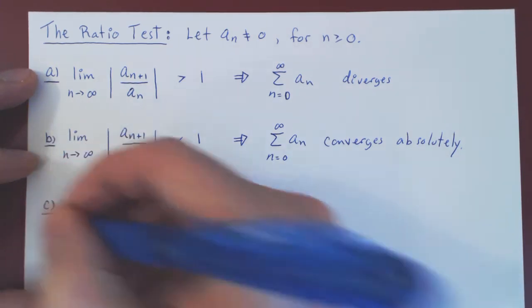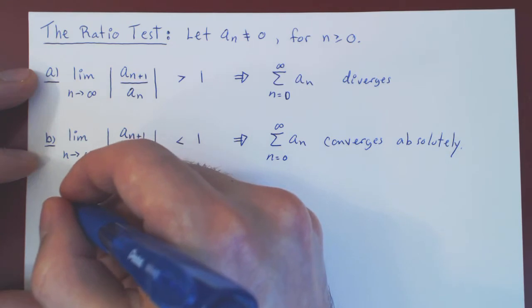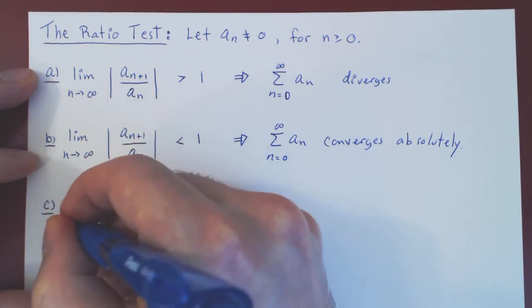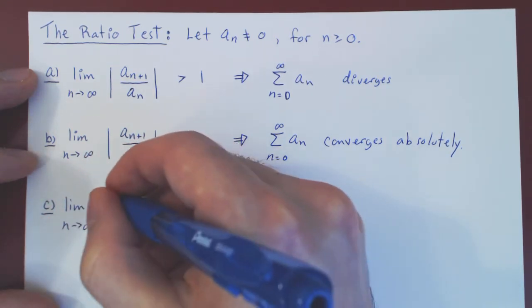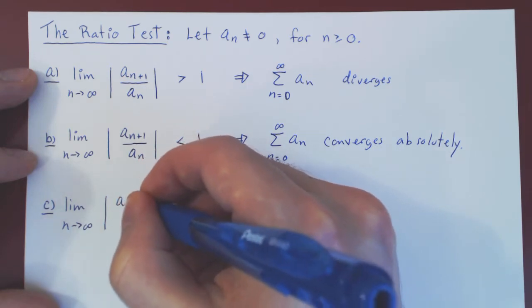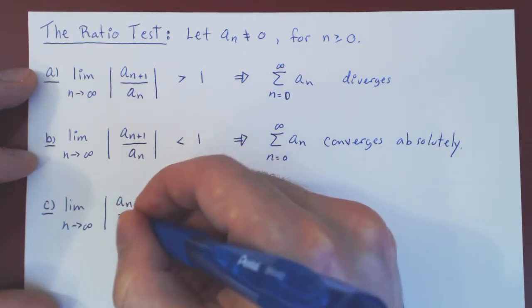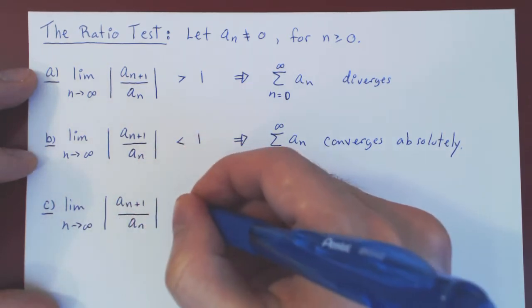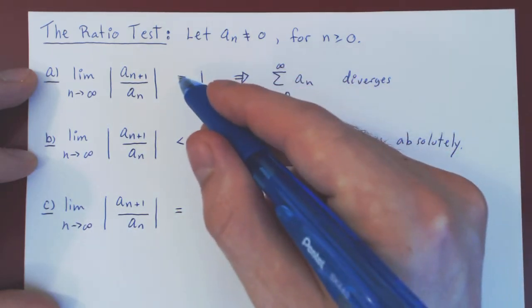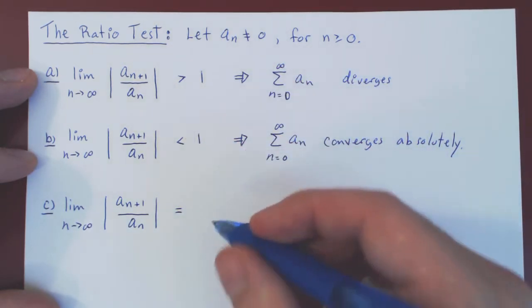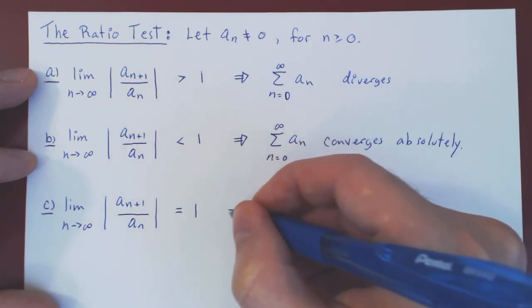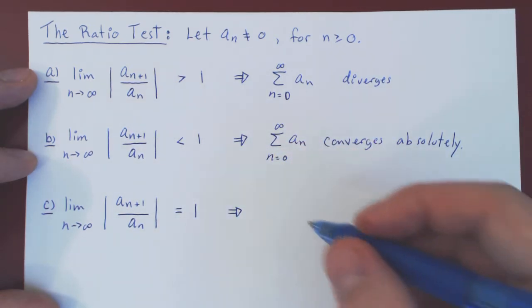And part c, we can probably guess now: if the limit as n tends to infinity of |an+1 over an| is, well, the only other option—if you're not larger than 1 or less than 1—you're equal to 1. And if that's the case, then the test fails.